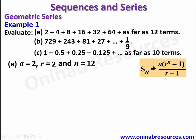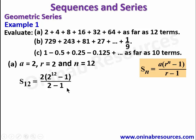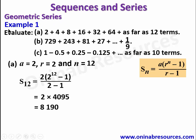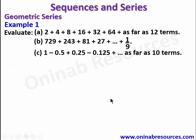So S12, since n equals 12, is equal to a, which is 2, into (2^12 - 1) over (2 - 1). After substituting, we have 2 times (2^12 - 1), which gives 4095, then multiplying out gives 8190 as the sum of the first geometric series represented in A. So we go to B.